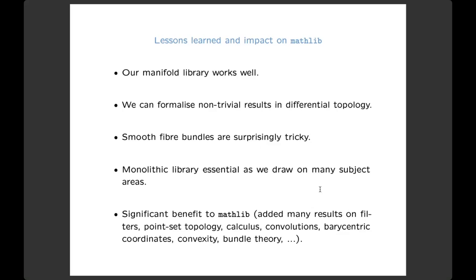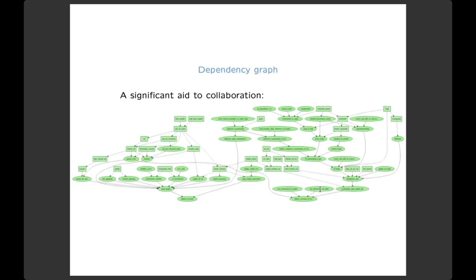This dependency graph is up here to emphasize how good a proof assistant can be as a collaboration aid. Each green node is a definition or non-trivial lemma that we had to prove, all stated formally very carefully. Green means finished — this graph was entirely blue or white at some point. It's very convenient to know what your co-authors have already done. If someone is working on part of the construction of loops, there's a formal statement of it, and you can already start using it and just wait until they fill it in. It was a really great aid to collaboration.